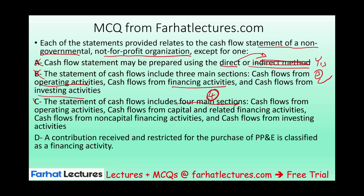Let's verify option D: a contribution received and restricted for the purchase of property, plant, and equipment is a financing activity. That is correct. When restricted funds are received, they are financing; once used to buy the asset, that period's transaction becomes investing. Since D is correct, we eliminate it, confirming that the incorrect statement is the one claiming four sections. Visit Farhat Lectures for additional multiple choice questions to help with CPA exam prep. Invest in yourself. Good luck and study hard.